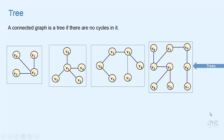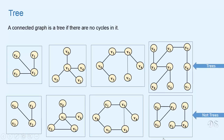These are examples of some graphs that are trees and these are some examples of graphs that are not trees. Now all these four graphs are connected and they don't have any cycles. This graph is not a tree because it is not connected. This graph is connected but it has this cycle, so it is not a tree.